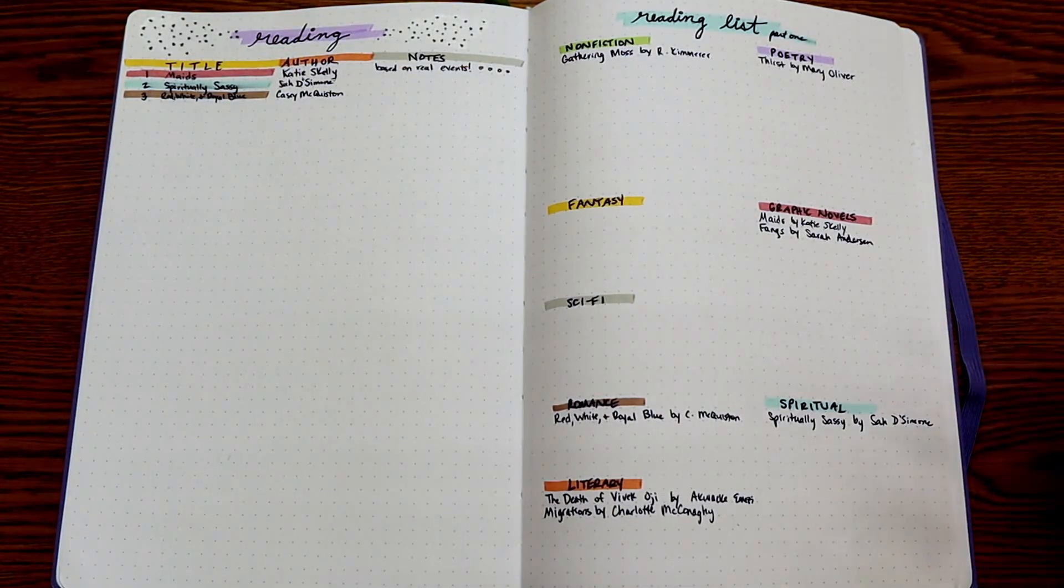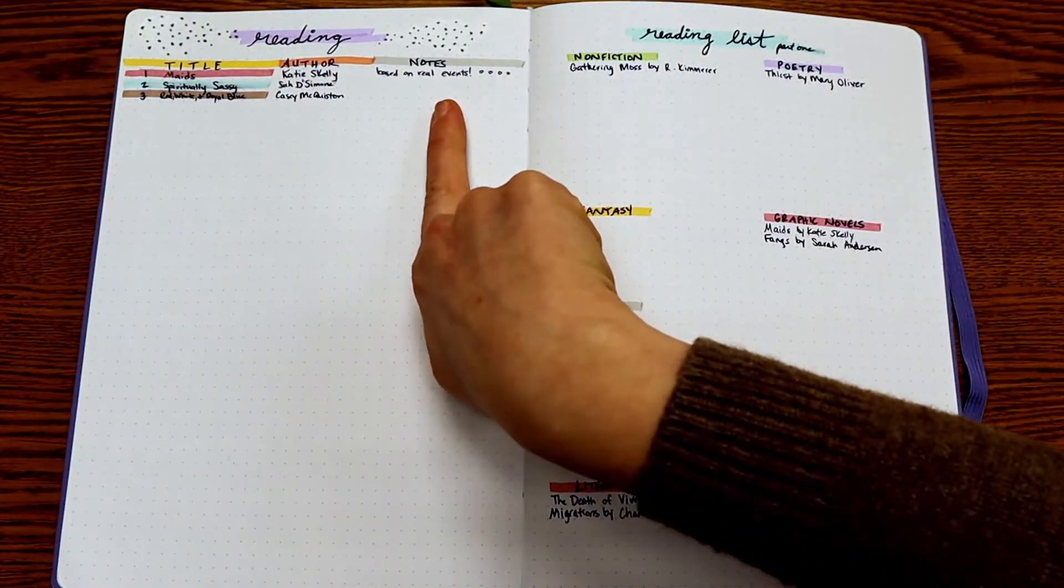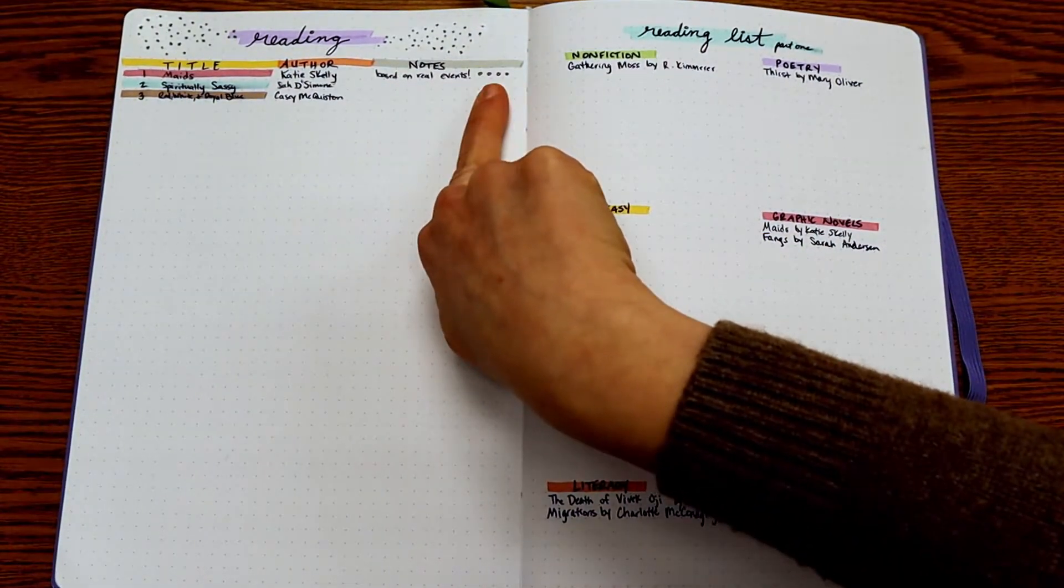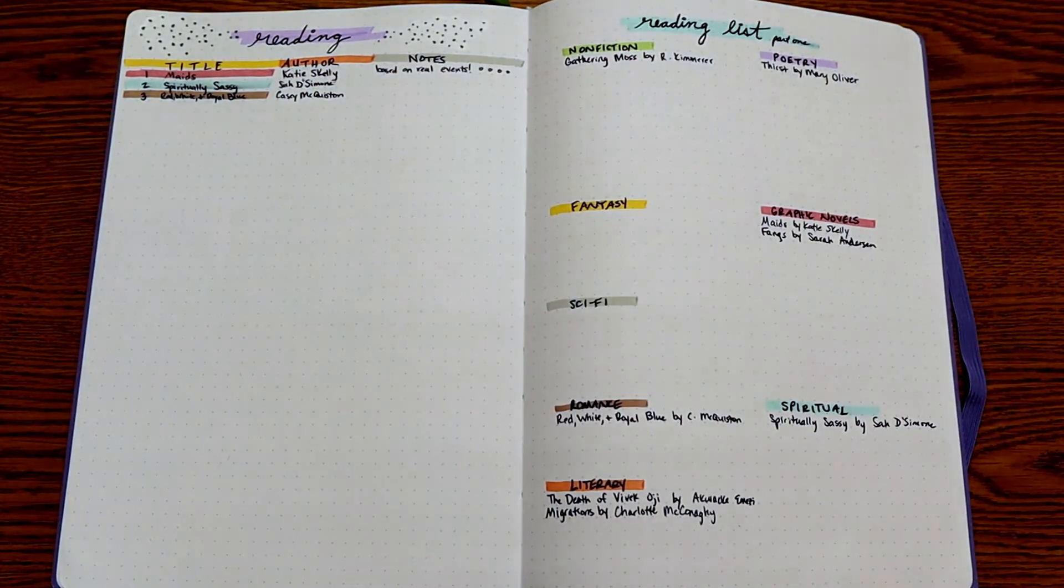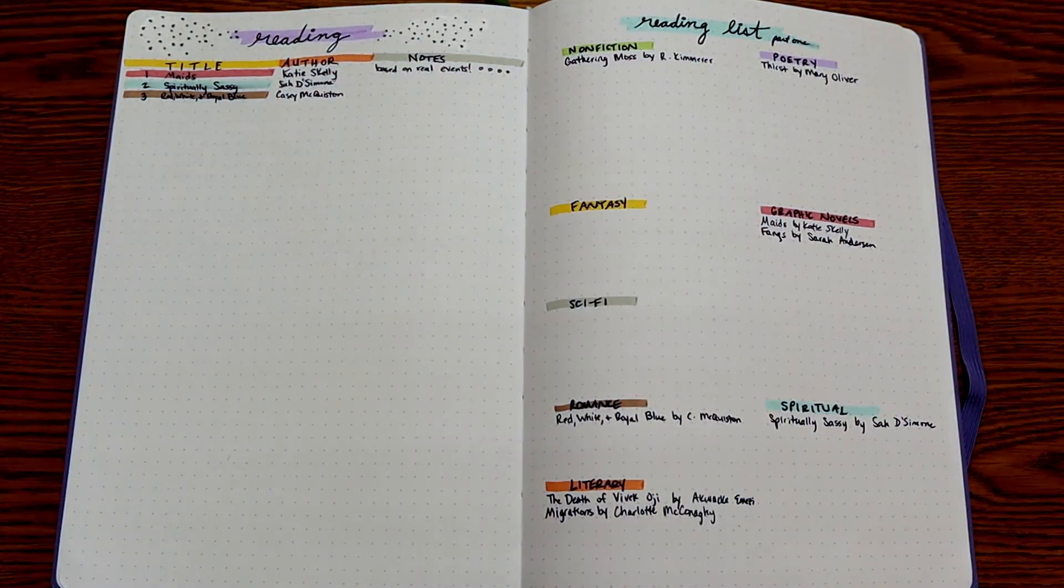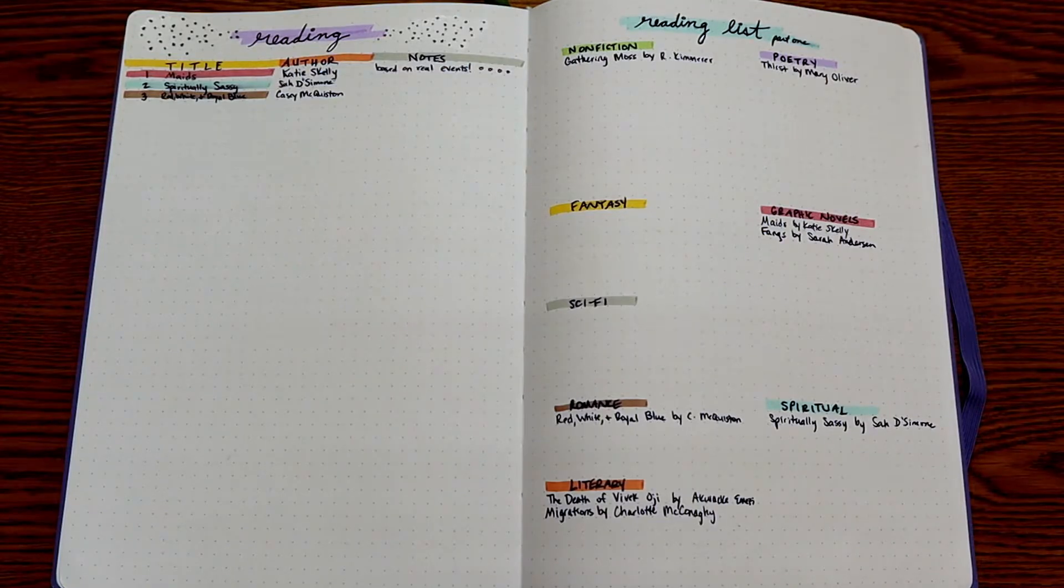I have the author on there and then also notes. So once I finish it, I can write notes about what I thought about it. I can put a little rating there. You really can do whatever you want with whatever you want to track. It doesn't have to be books. It could be movies, TV shows, podcasts, whatever you want it to be. You can make a tracker for it.